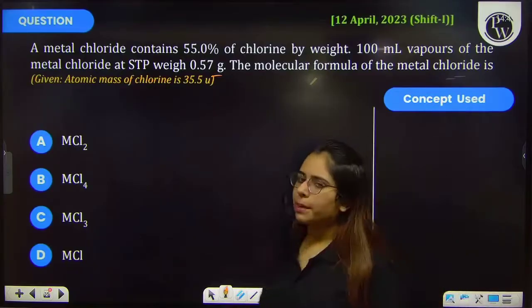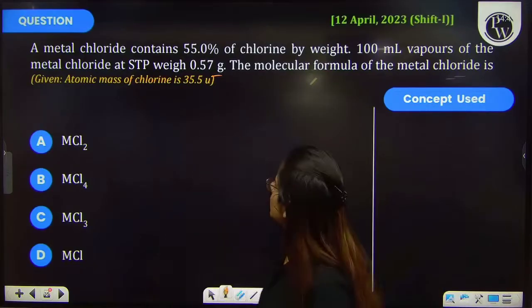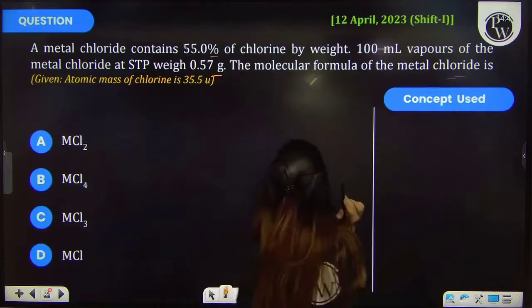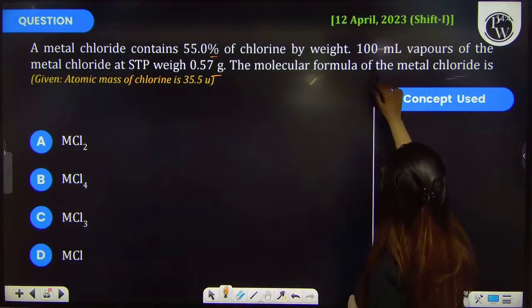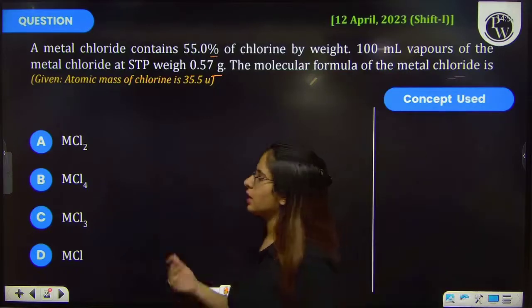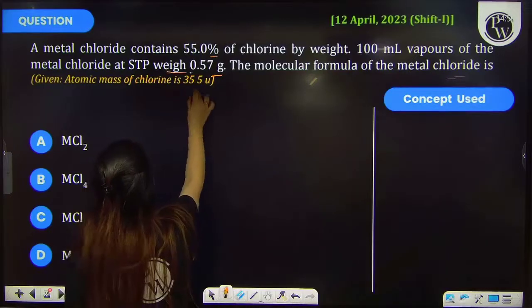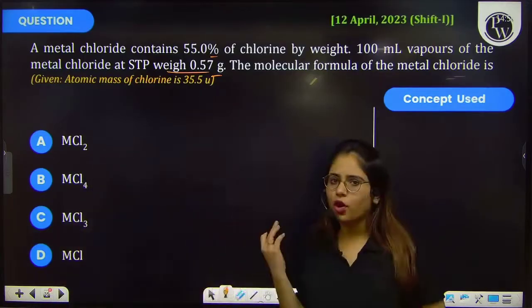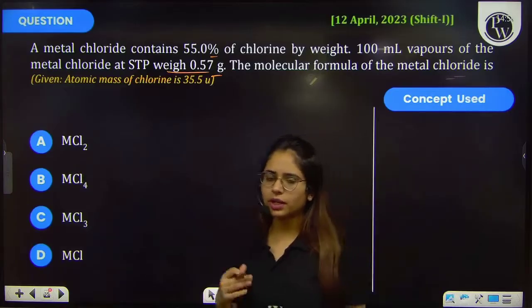So you have a metal chloride in which you have to calculate the valency of metal.